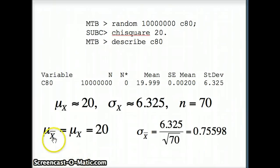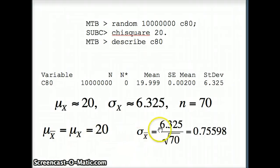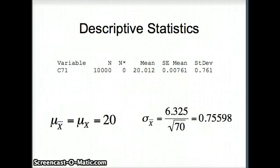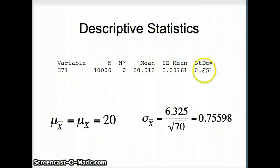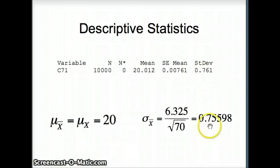The mean of the x-bars should equal the mean of X, which is 20, so the mean of the averages is 20. The standard deviation of averages is the underlying standard deviation divided by the square root of 70, or 0.75598. Looking at our descriptive statistics for 10,000 numbers: mean of 20.012, fairly close to 20. The standard deviation of our averages in C71 is 0.761, fairly close to our predicted value of 0.75598.